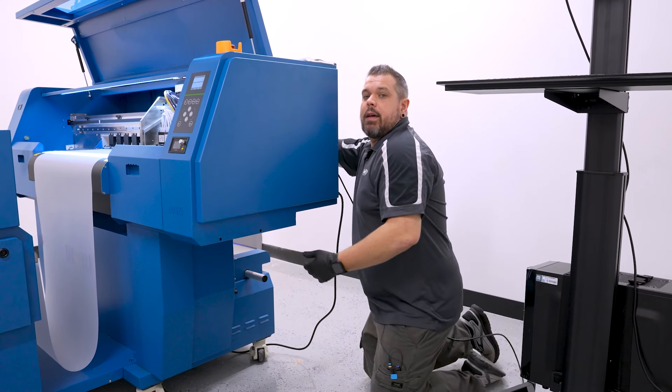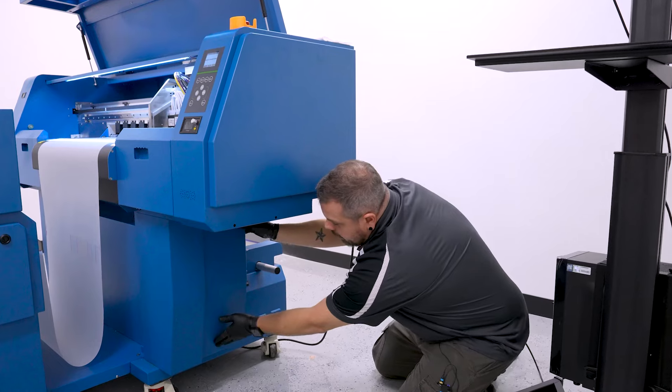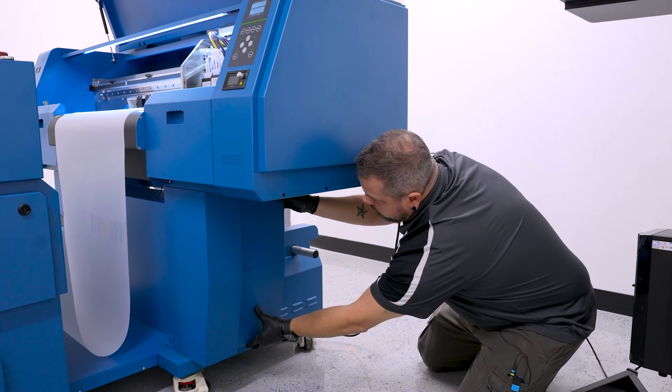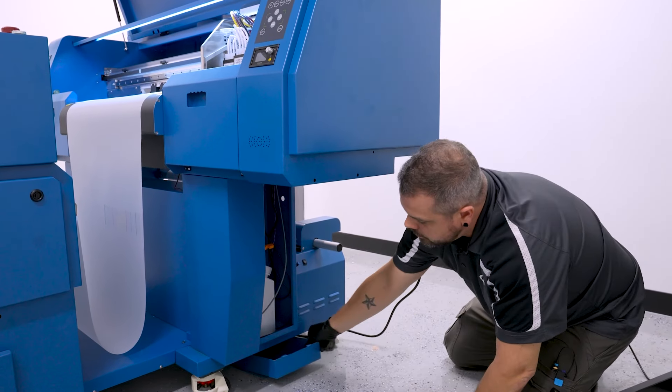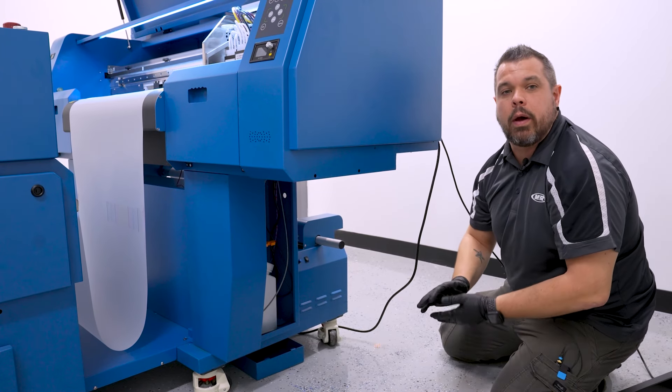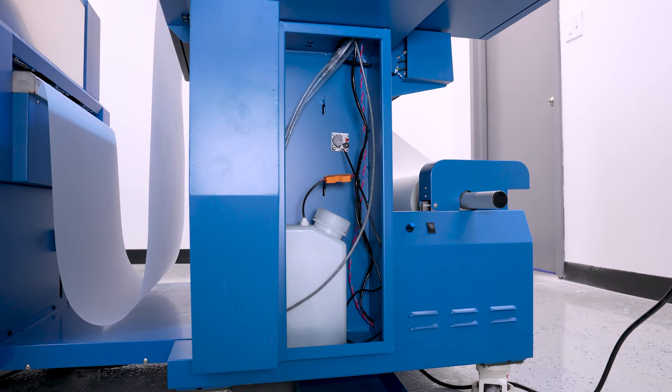So to access your waste tank, it does sit behind this cover, and all you have to do is just lift up, slide it off, and get it out of the way.